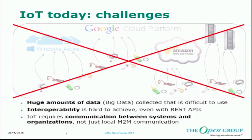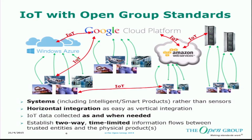The current IoT approach actually has quite a few challenges. We don't want to just collect huge amounts of data and then hopefully somebody will find something from it. We have these vertical silos where it's really hard to get any kind of interoperability between different applications. And finally, IoT requires communication between systems and organizations — it's not just about machine-to-machine communication.